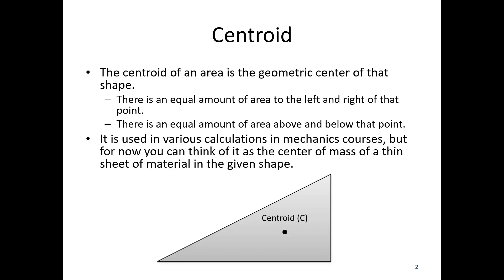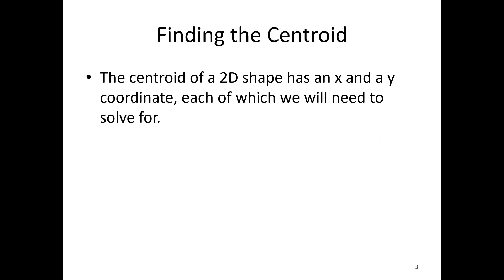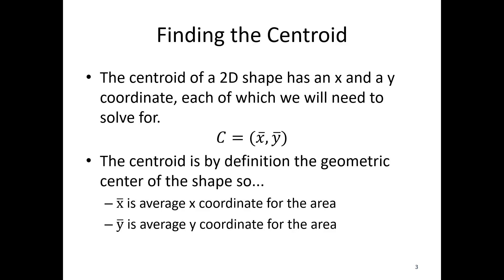So if I had a triangular piece of sheet metal, the center of mass — which we really call G — would be at that same point. The centroid of a 2D shape has an x and y coordinate, so we need to solve for both of those. Point C is at (x-bar, y-bar): x-bar is the average x coordinate of the area, and y-bar is the average y coordinate of the area.